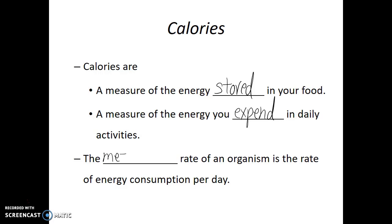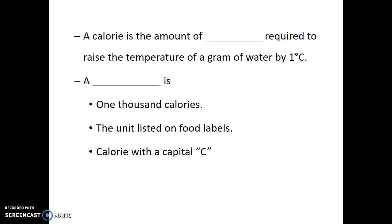The metabolic rate of an organism is the rate of energy consumption per day. A calorie is defined as the amount of energy required to raise the temperature of a gram of water by one degree centigrade. This is the definition used in physics and chemistry. A kilocalorie is 1000 calories with a little c, yet this is the unit listed on food labels — sometimes just called Calorie with a capital C, which is a bit unfortunate.